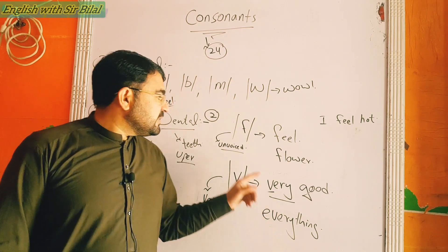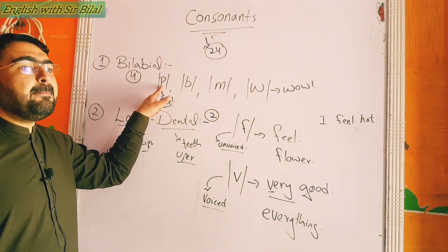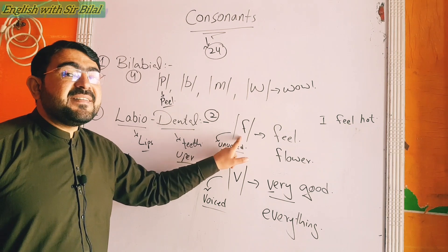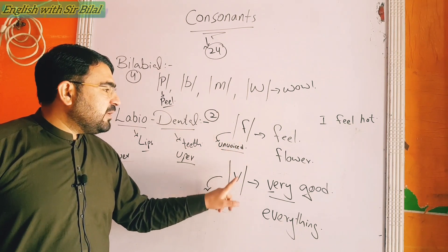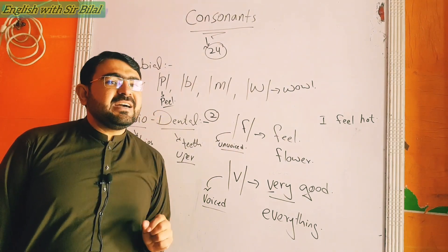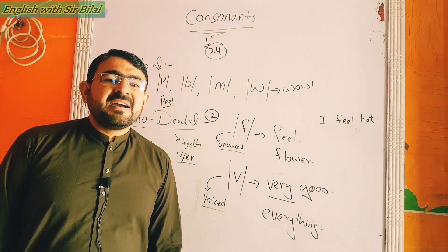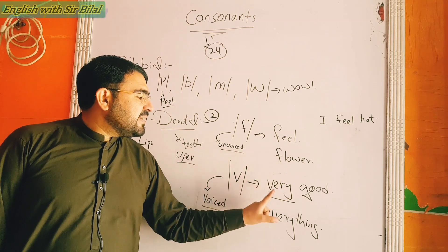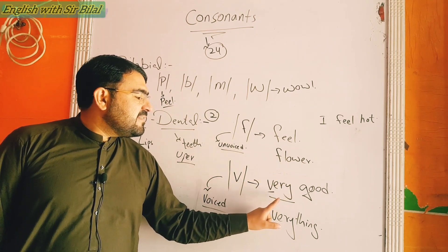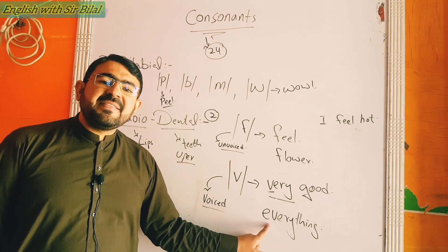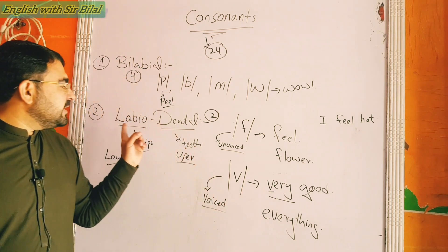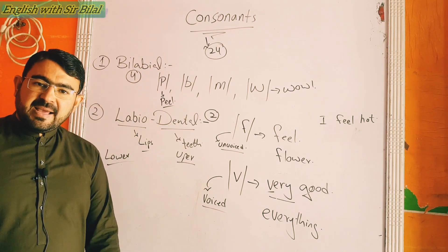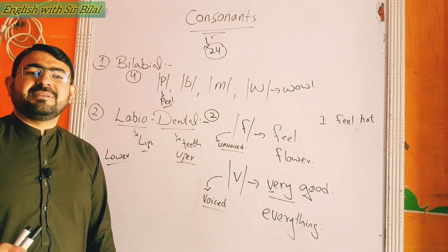Let's practice once again. In these two labio-dental sounds, the upper teeth are touching the lower lip. Practice: 'feel,' 'flower,' 'very good,' 'everything.' Hope you are now clear about the labio-dental sounds and bilabial sounds. See you in the coming video. Do practice these sounds. Thank you so much.